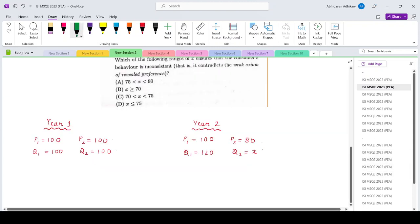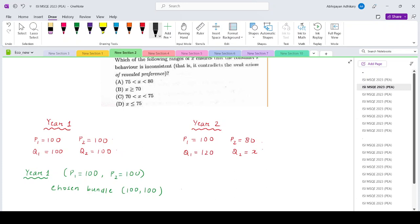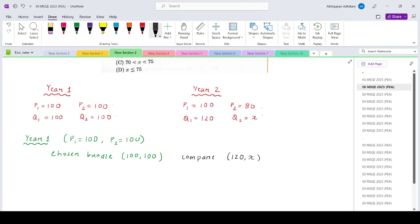Now let us consider first year, year 1. In year 1, the price of good 1 is 100 and price of good 2 is also 100. The chosen bundle is 100, 100. And what is the other bundle with which we have to compare? We have to compare it with the bundle that has been chosen in year 2, which is 120, x. So we are saying that in year 1, this choice basically violates the weak axiom of revealed preference. That means the choice of 100, 100 in year 1 will basically violate weak axiom of revealed preference. When is it possible?